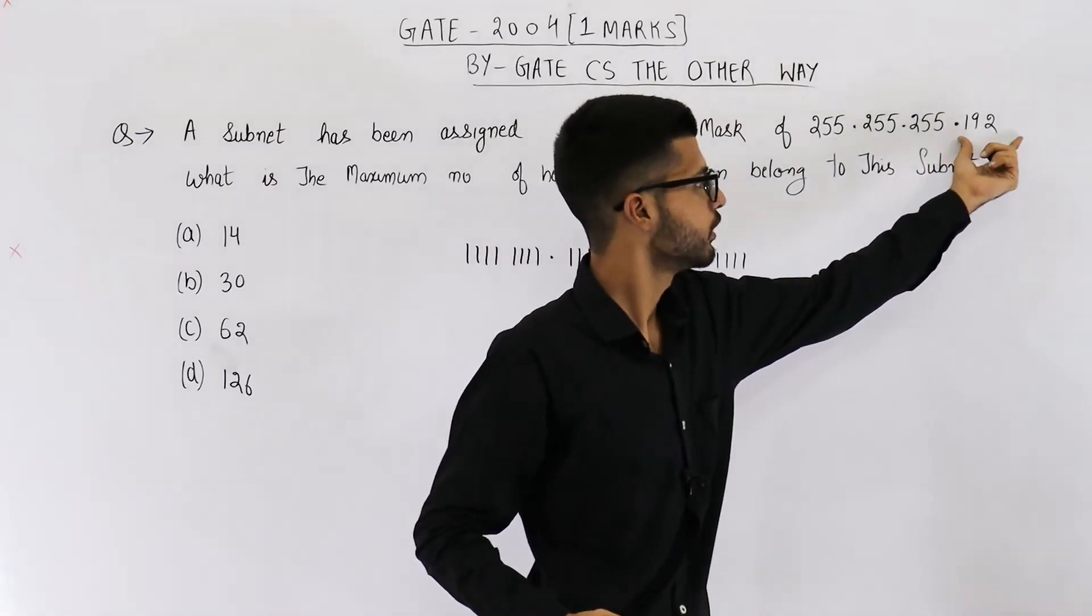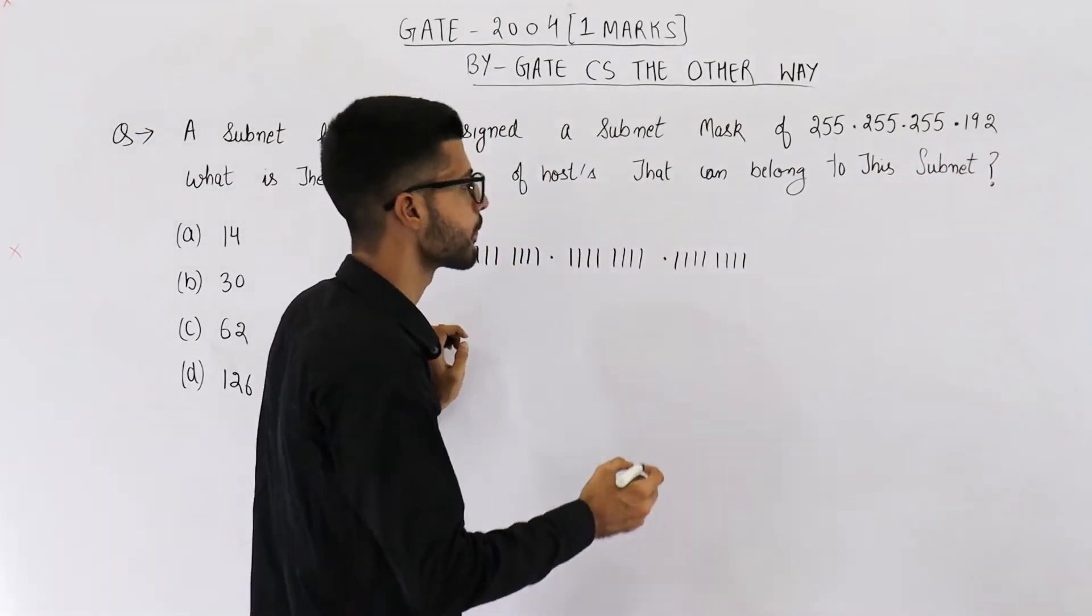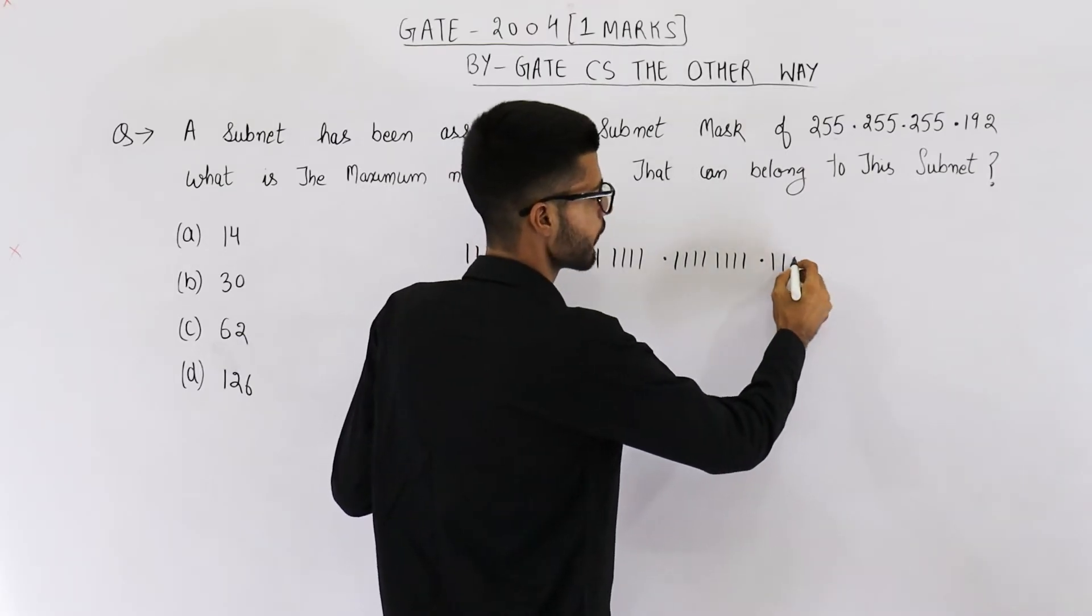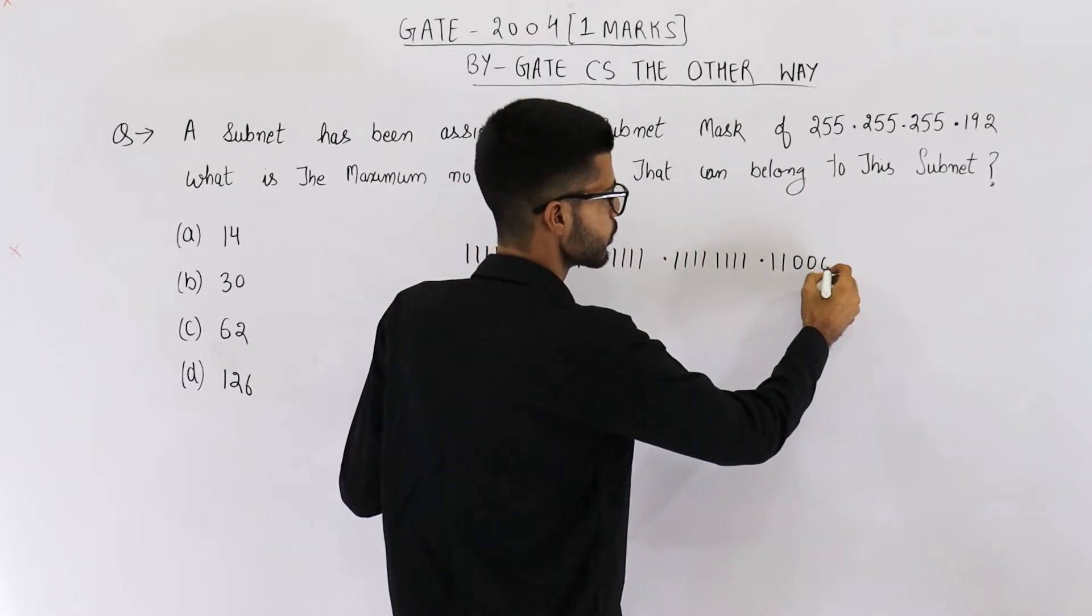Now, we have 192. 192 will be 1, 1 and then all 0s. So, we have 6 0s.